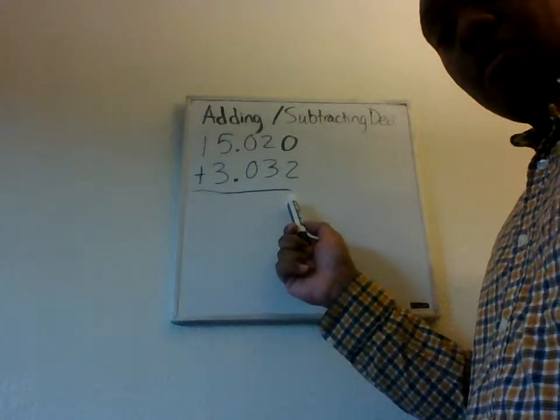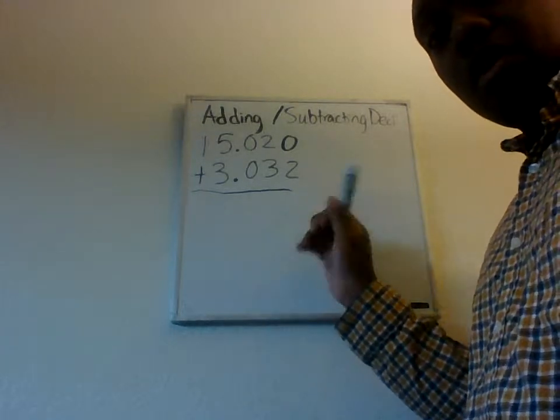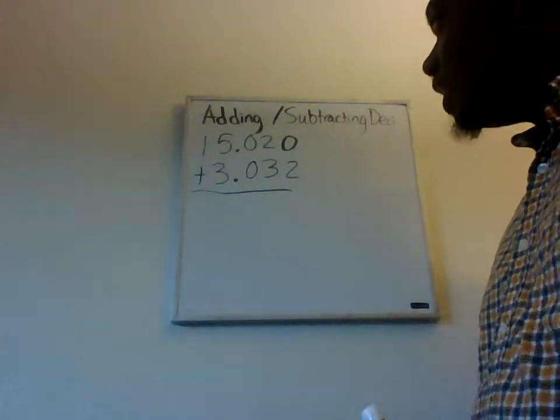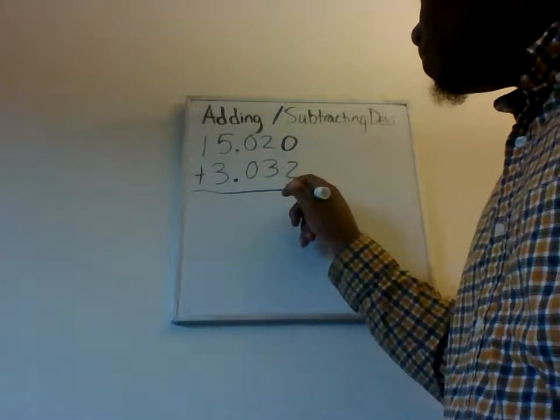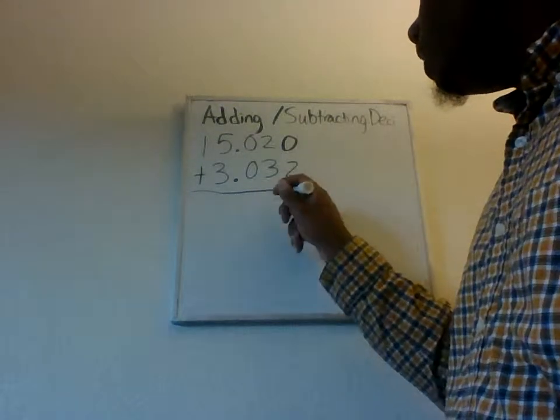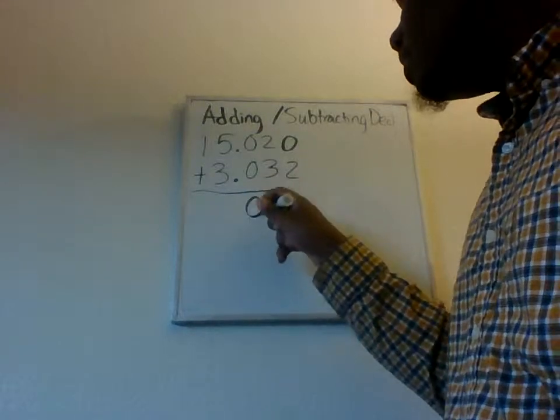So, as you added before, you started off with the rightmost end and worked your way up. That's right, you did. So, when we add this, we get zero plus two, and we get two. Two plus three, we get five. Zero plus zero, we get zero.